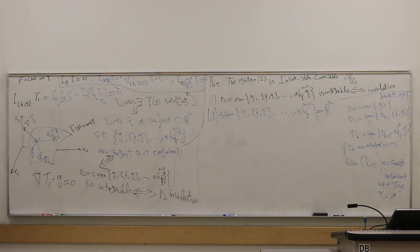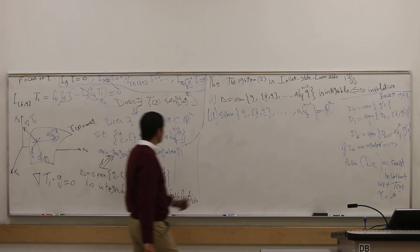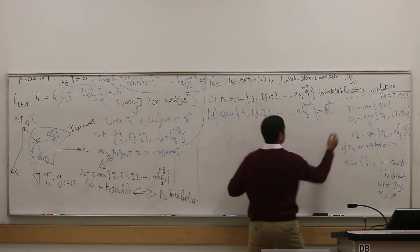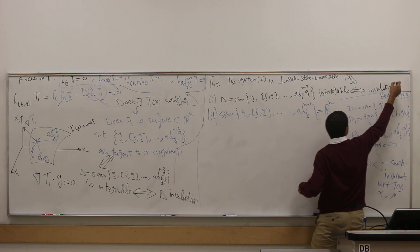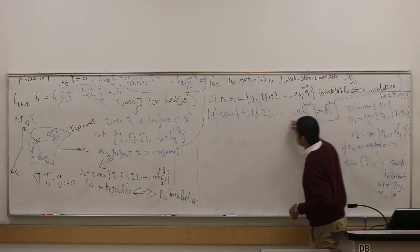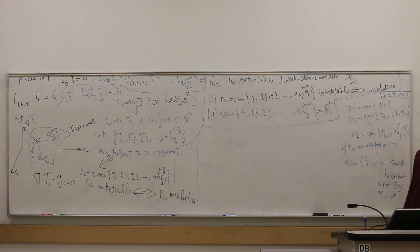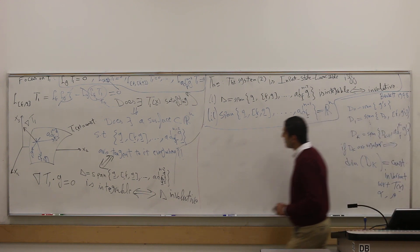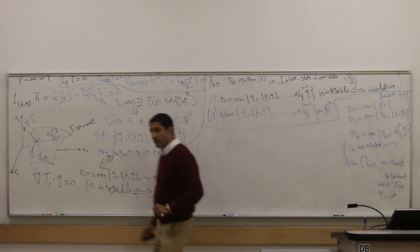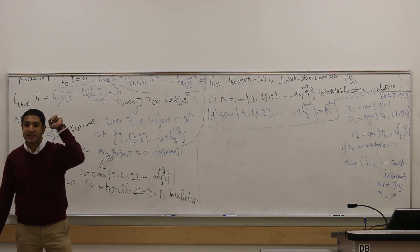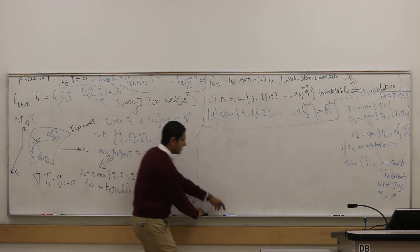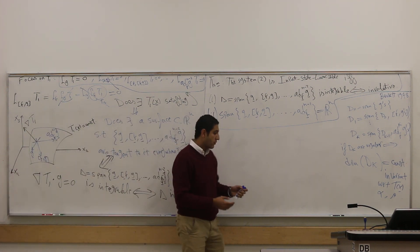Each condition is necessary; together they are sufficient, and we'll have an if and only if. So this is the main result we have been discussing so far. The system has to be linearly controllable. Remember, if f is at the equilibrium point — you computed this before — at the equilibrium point.